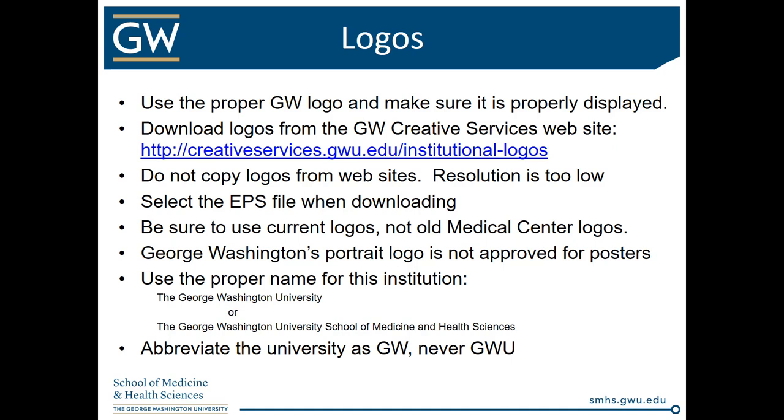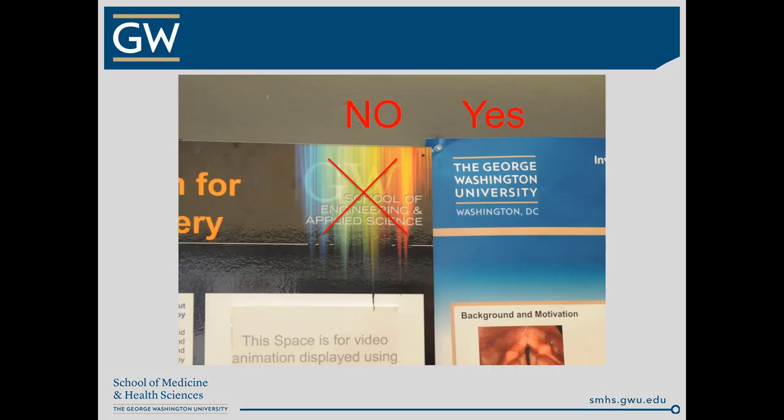Make sure you use the proper name for this institution — we are called the George Washington University, or the George Washington University School of Medicine and Health Sciences. If you're abbreviating the university, always abbreviate it as GW, never GWU. Here's an example of a logo that is not acceptable — it was designed by someone on their own and you cannot display that on a poster. The logo on the right-hand side is the current GW logo. Note it's in reverse form with white text so it shows up on the darker background — we in Biomedical Communications can provide that reverse logo if you have a dark background.